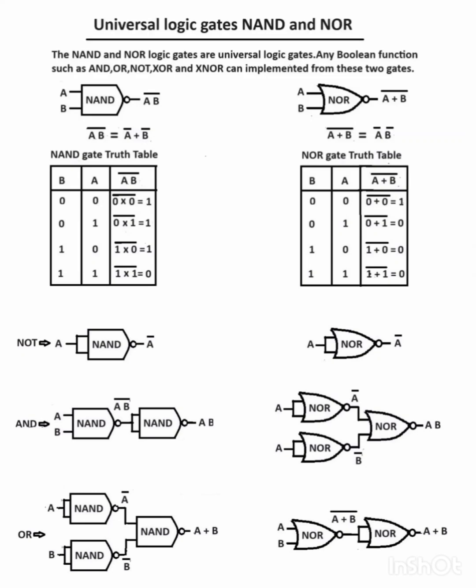Hello. Universal logic gates: NAND and NOR. The NAND and NOR gates are universal logic gates — any boolean function, such as AND or NOT, can be realized from these two gates.